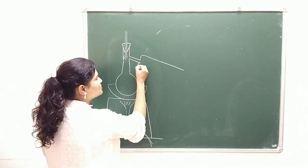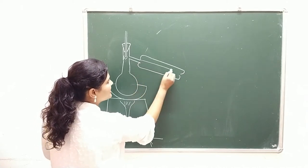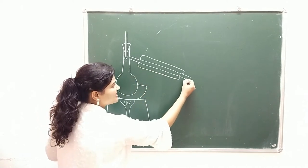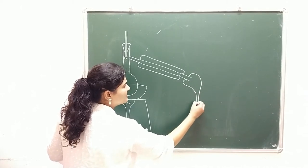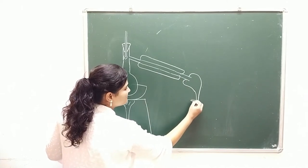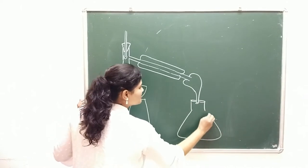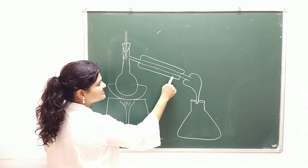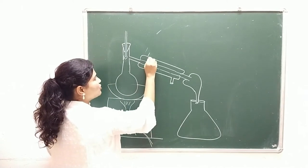This is how the condenser will look. It will have an outer jacket where water will be circulated, and an inside tube. This inside tube will be connected to a connector which will allow us to collect the contents coming from this tube in a receiver. The condenser will have two openings — one at the bottom and another at the top.